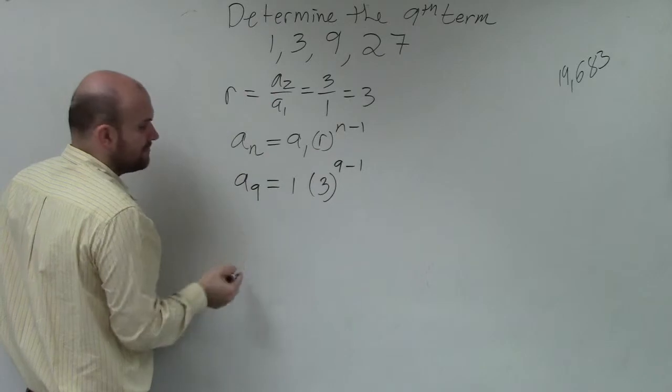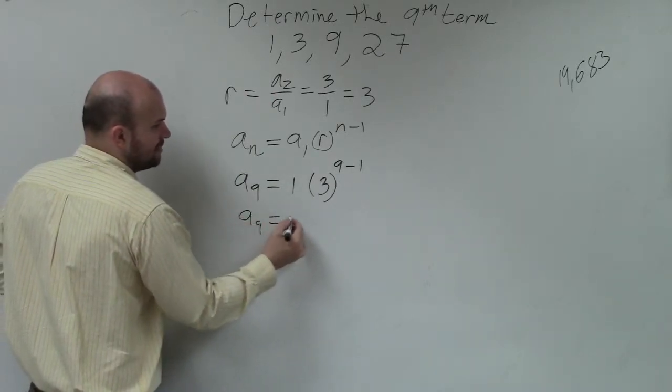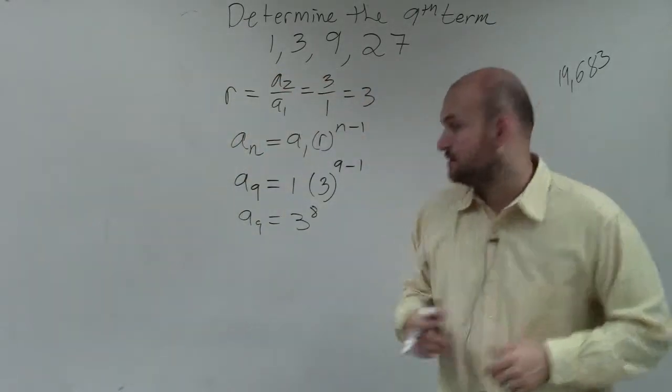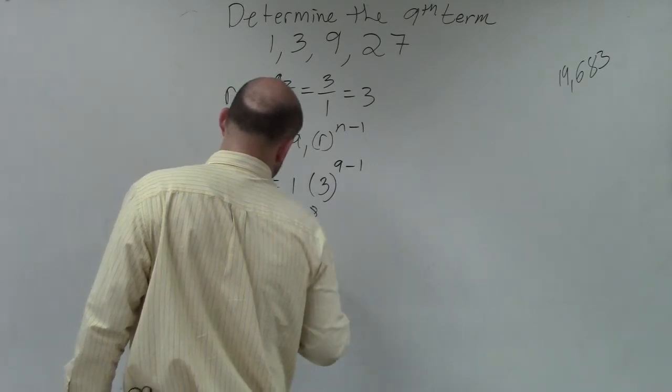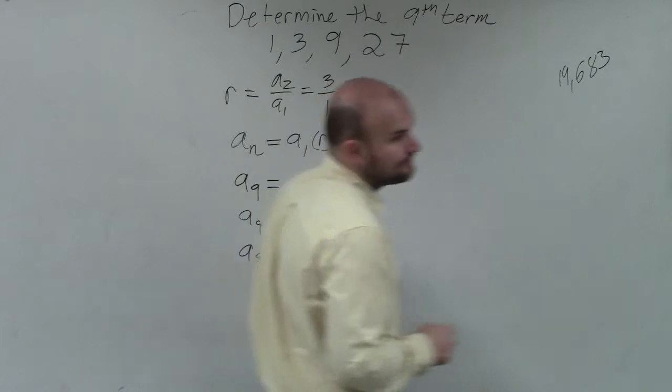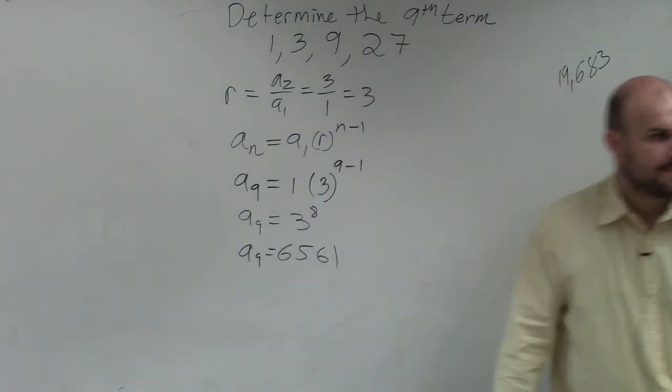But if it did start with 3, then you'd work. Now, a to the ninth equals 3 to the eighth power, which, Brianna, is going to be? 6,561. And there you go. Done.